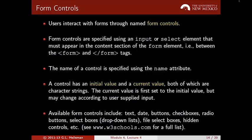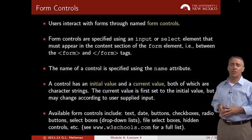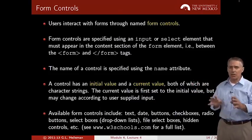Available form controls include text, date, buttons, checkboxes, radio boxes, select boxes (drop-down lists), file select boxes, and hidden controls. Hidden controls are not for passing secret information — they're for passing meta information, such as additional state data if you have a long multi-part form. To see a full list of form controls, go to www.w3schools.com.